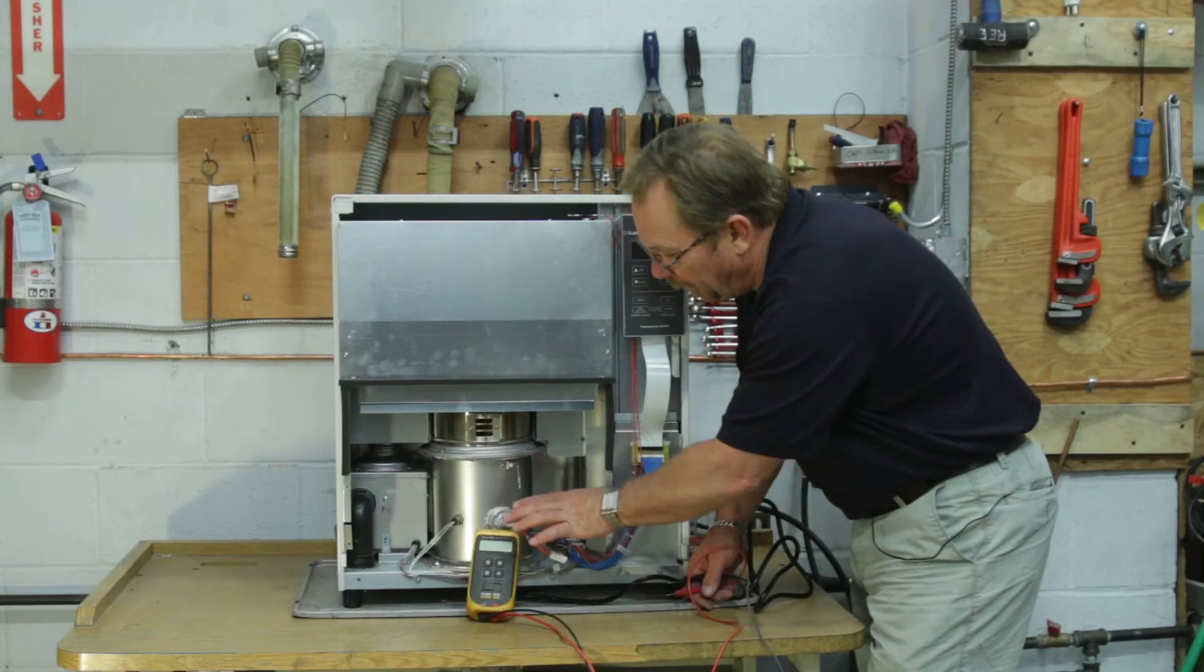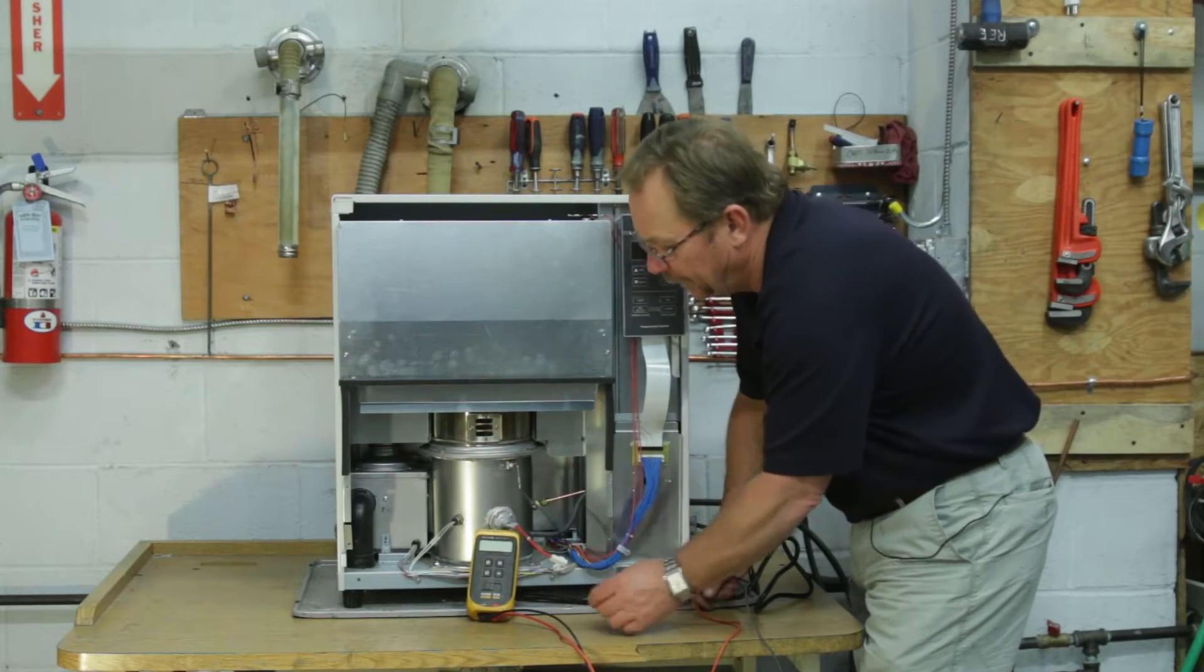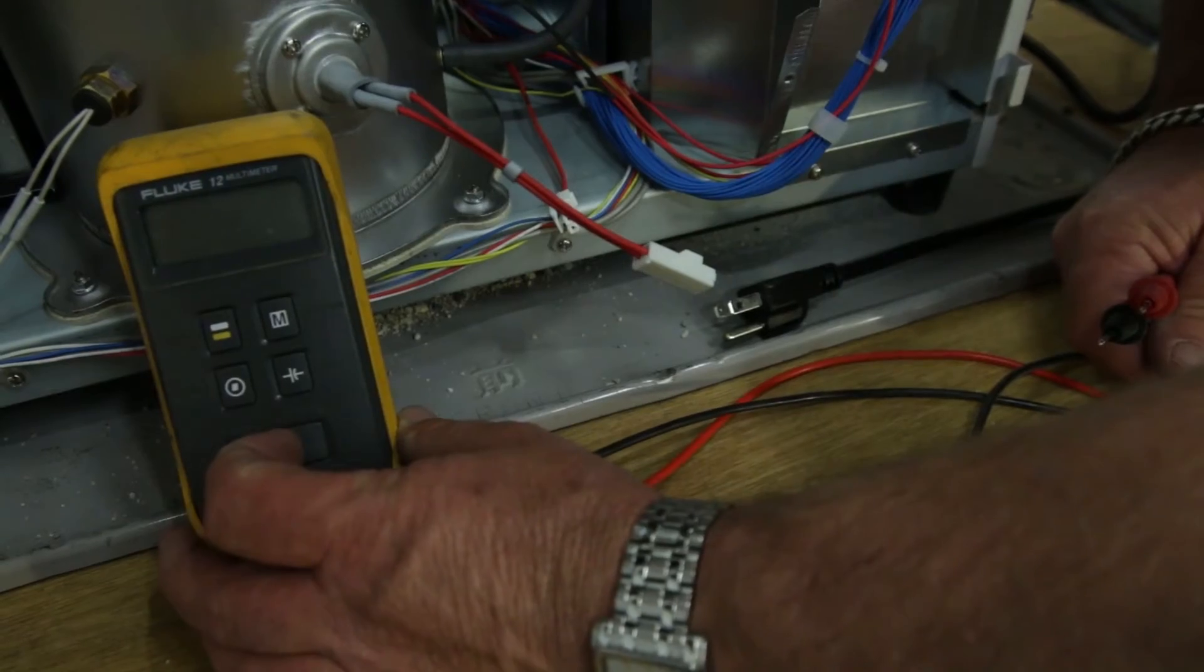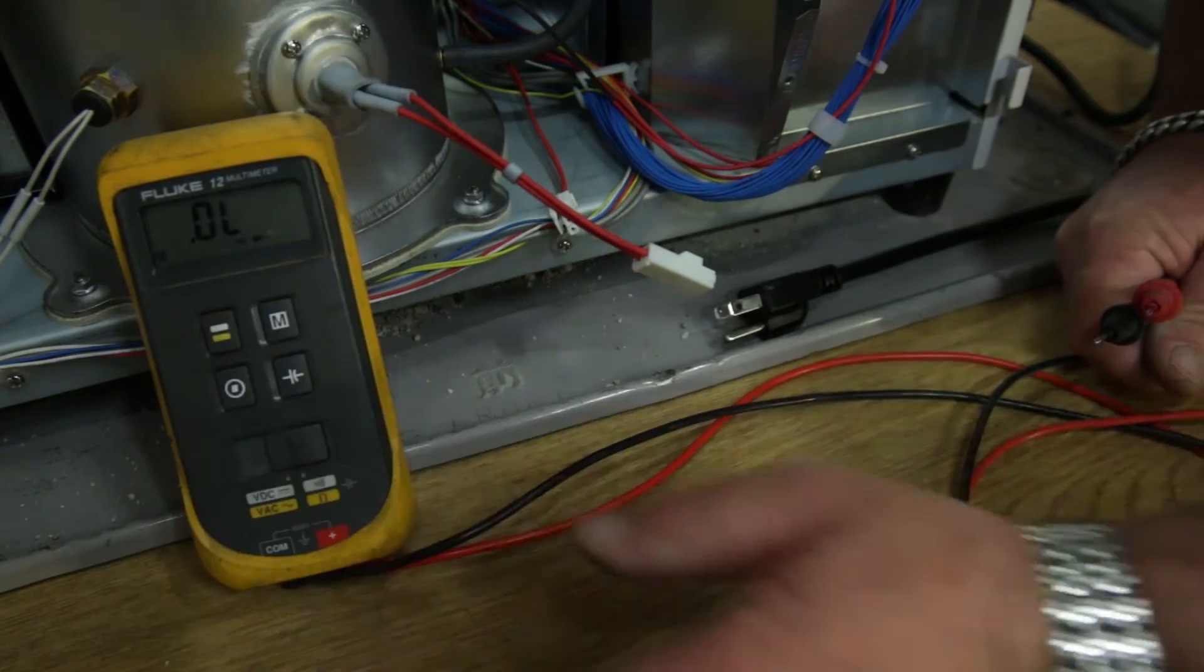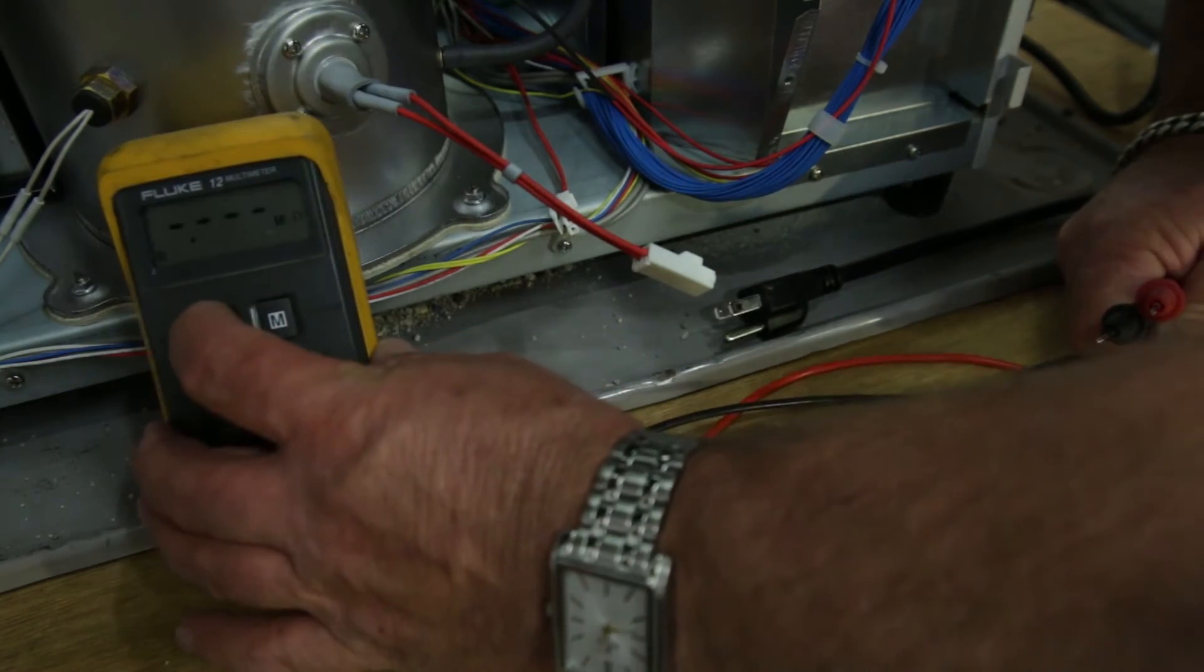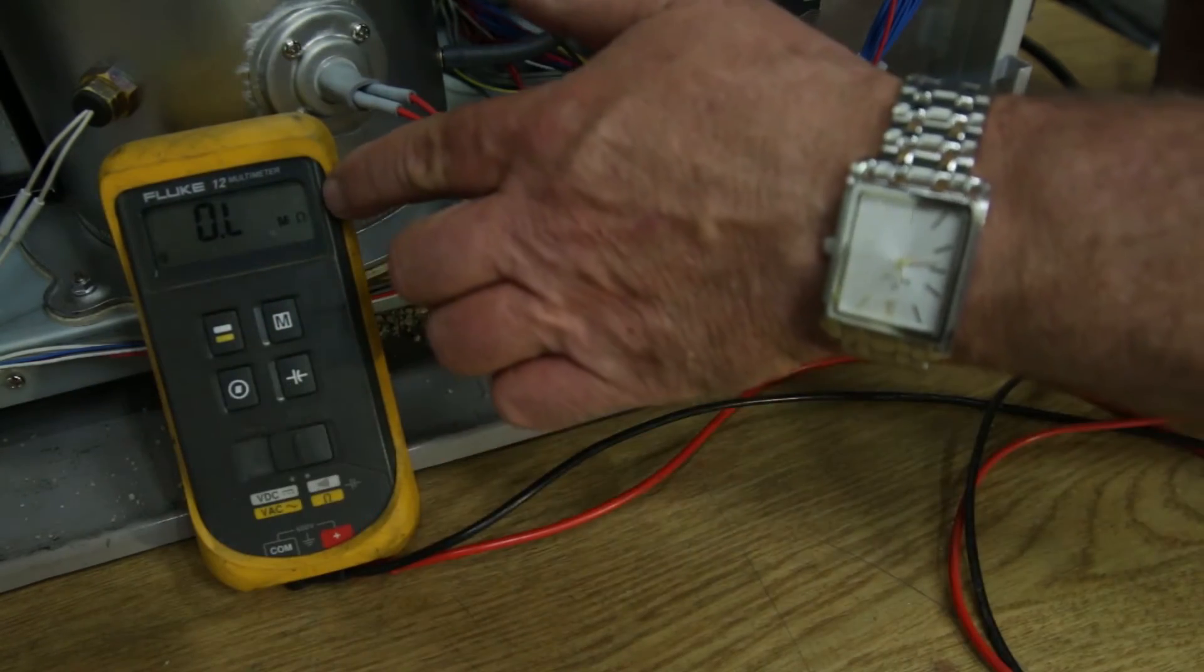Now that we have the hot source igniter isolated from the main circuit board, we're going to turn our multimeter on and shift this over to ohms. We know we're in ohms because we have the little upside down horseshoe right there.